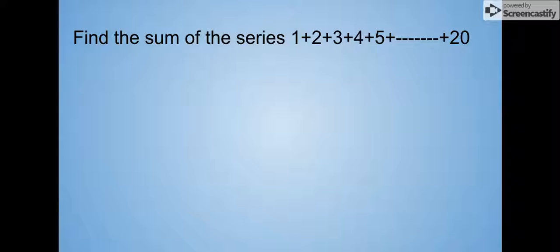Find the sum of the series 1 plus 2 plus 3 plus 4 plus 5 up till 20. This is also called natural numbers. It's very hard to go like 1 plus 2 is 3, 3 plus 3 is 6, so let's go for the easy method.